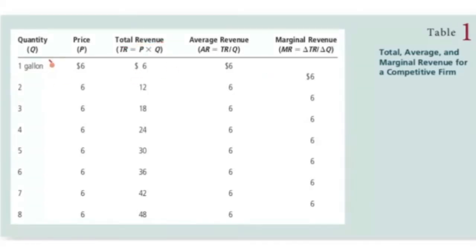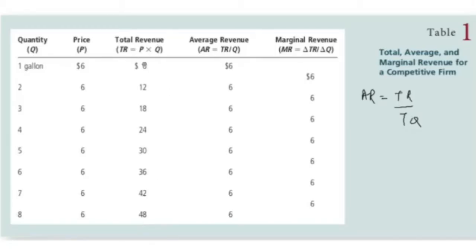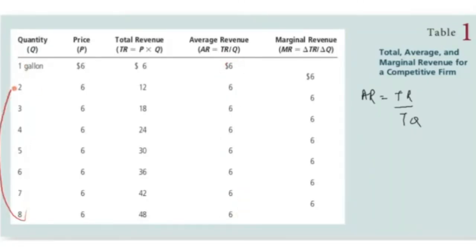Total revenue is price into quantity: six dollars times one is six, six times two is twelve, six times three is eighteen, and so on. For average revenue — the fourth column — you divide total revenue by total quantity. Six divided by one gives six, twelve divided by two gives six, eighteen divided by three gives six. You notice that average revenue throughout different levels of quantity is constant at six, which is the price of the commodity.